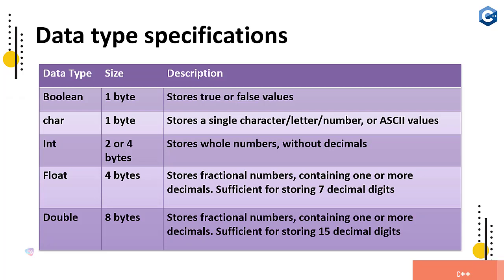Float is four bytes, stores fractional numbers containing one or more decimals, sufficient for storing seven decimal digits. Seven after the period or dot.